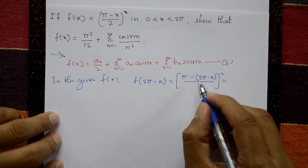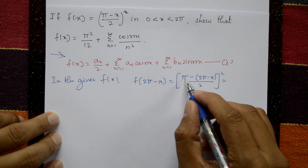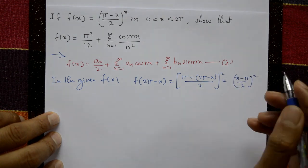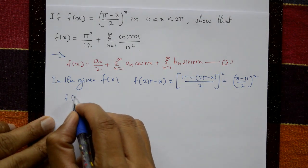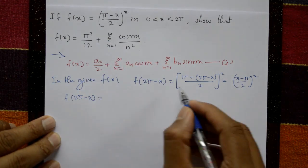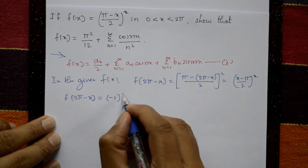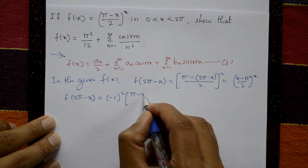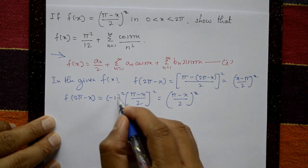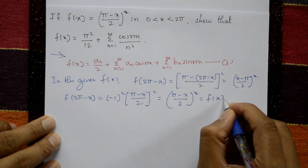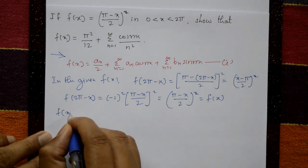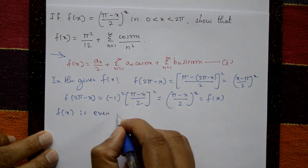This equals (x minus π) by 2, whole square. Taking minus outside: minus 1 times (π minus x) by 2, whole square. Since minus 1 squared equals plus 1, we get (π minus x by 2) whole square, which is f(x). Therefore f(2π minus x) equals plus f(x), meaning f(x) is an even function.